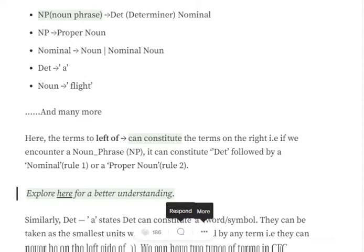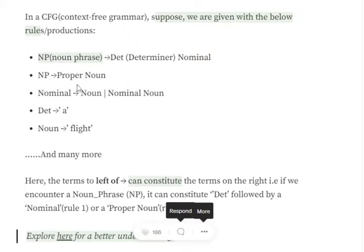Assume that we have some rules from the CFG. Let's understand what these terms mean. If you look at the first rule, noun phrase arrow determiner nominal, it says that a noun phrase can consist of a combination of determiner and nominal. Similarly, if you look at the third one, a nominal can consist of a noun or a nominal noun.